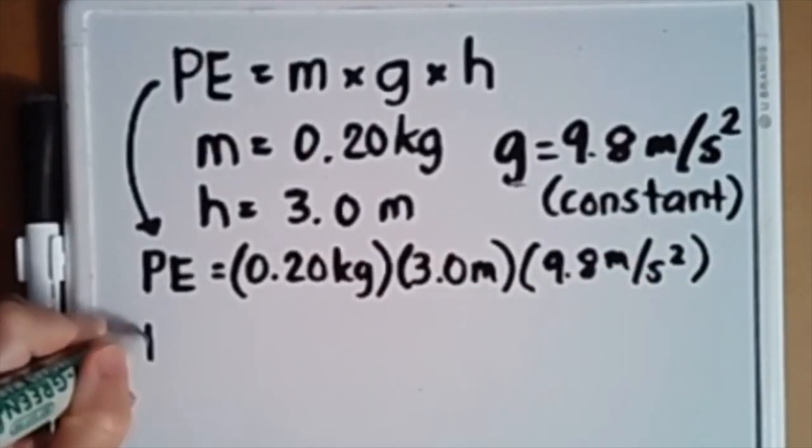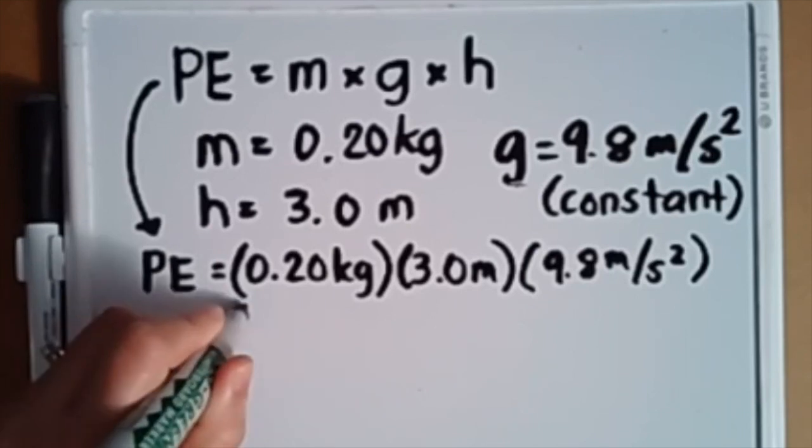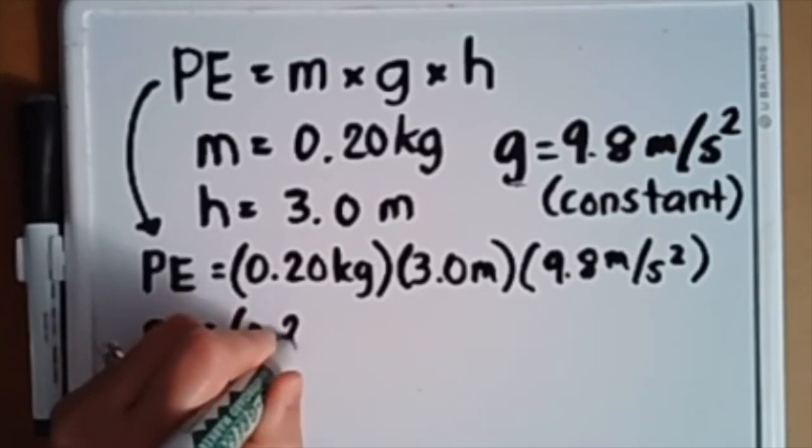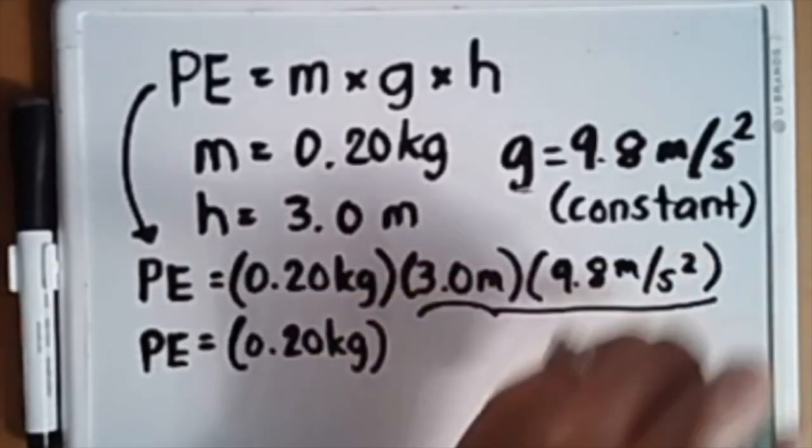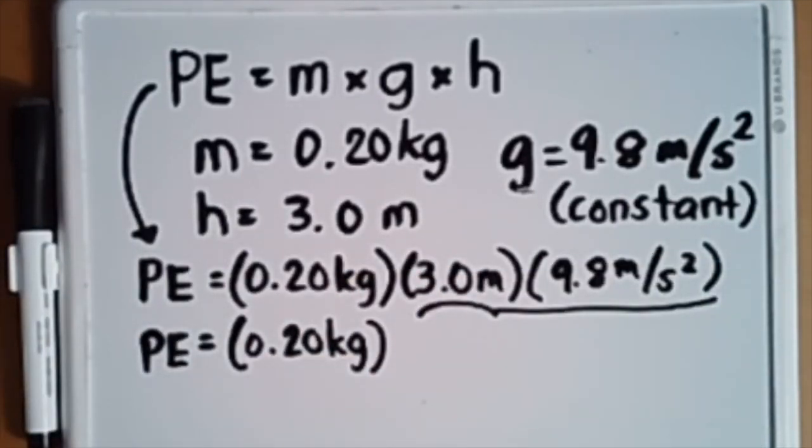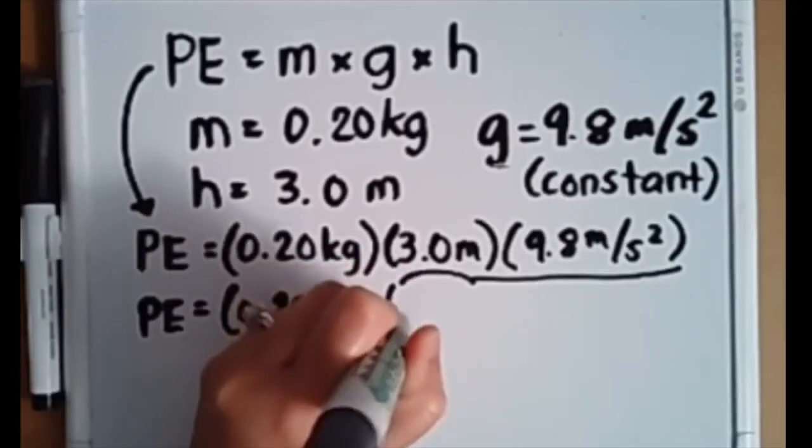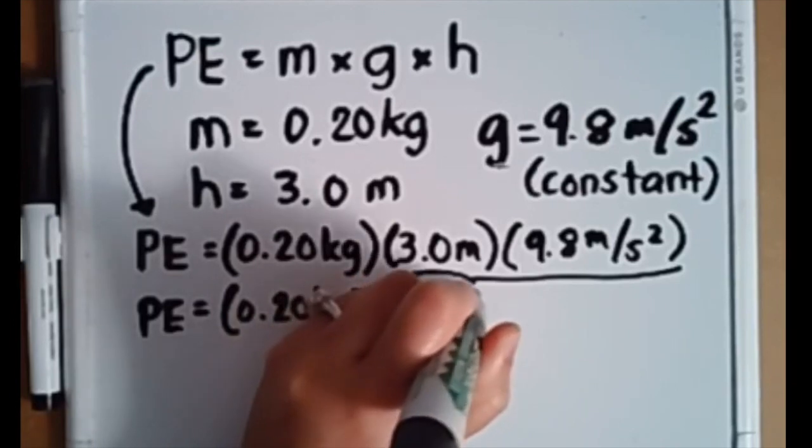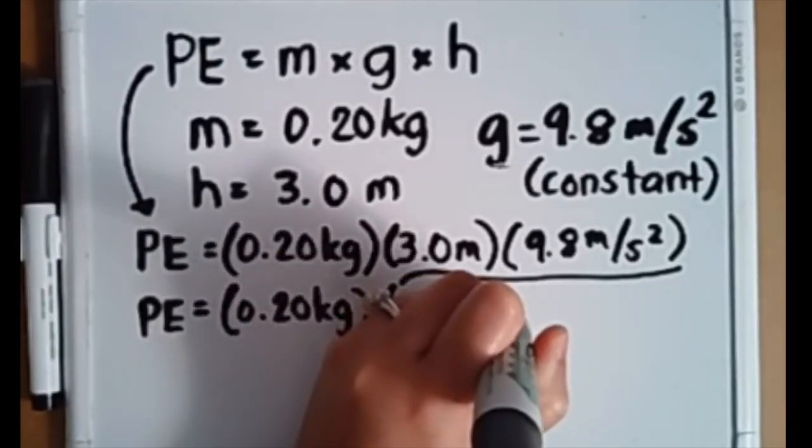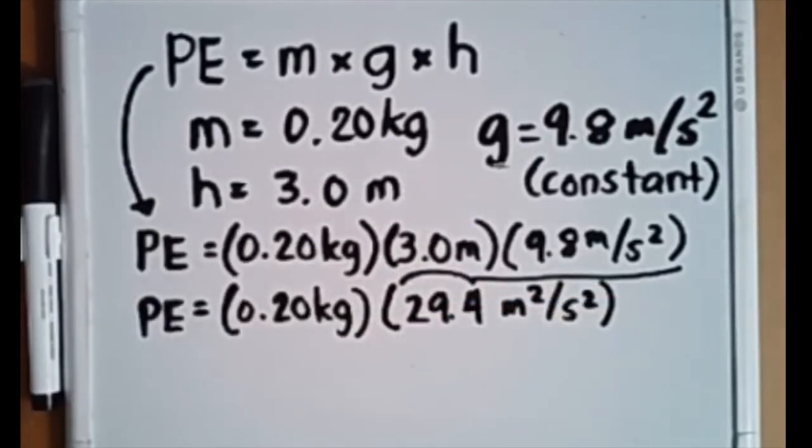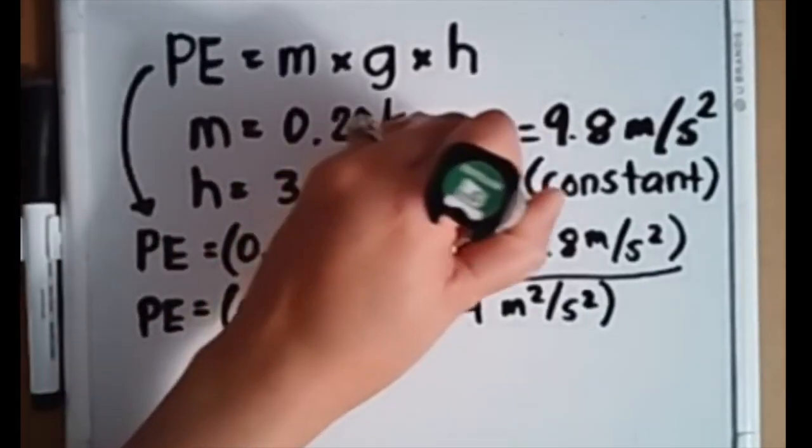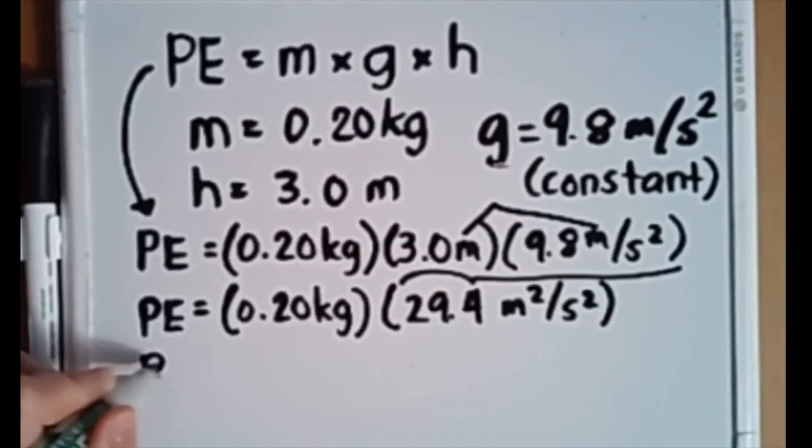Put in 9.8 meters per second squared. I've switched M times H times G—it's multiplication, so you can do that. Now 3 times 9.8 gives you 29.4. Since you're multiplying meter and meter, that M becomes M squared or meters squared over second squared. Now multiply 0.2 times 29.4.